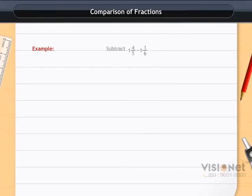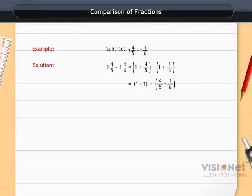Example: Subtract 1 and 4 by 5 minus 1 and 1 by 6. Solution: As seen in the animation, by subtracting 1 and 4 by 5 minus 1 and 1 by 6, we get 19 by 30.